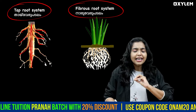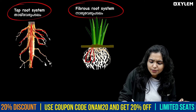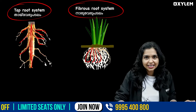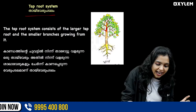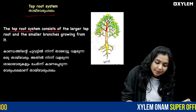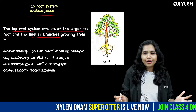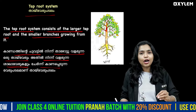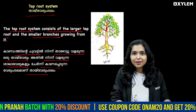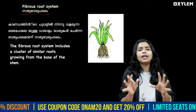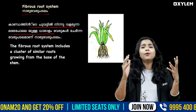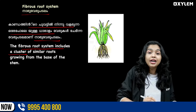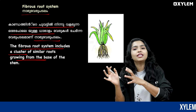Now we are going to show the fibrous root system — that's similar to a cluster. We have to show that in other parts, that's separate. There is a larger taproot system, and a similar branch is growing from it. For example, the root system includes a cluster of similar roots growing from the base of the stem.